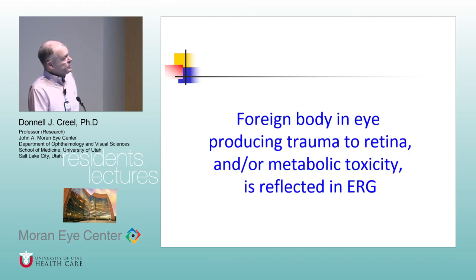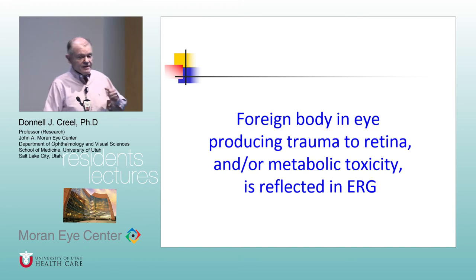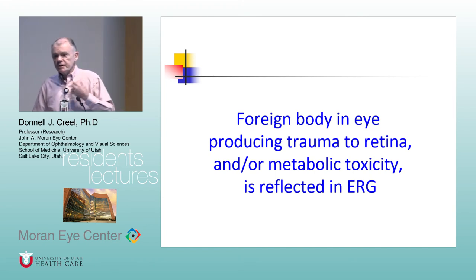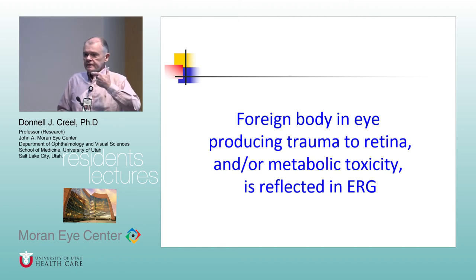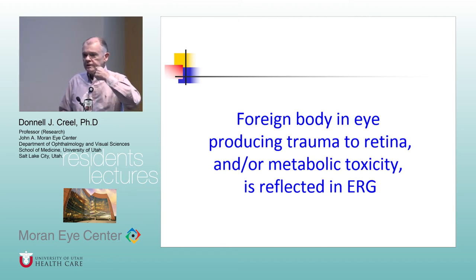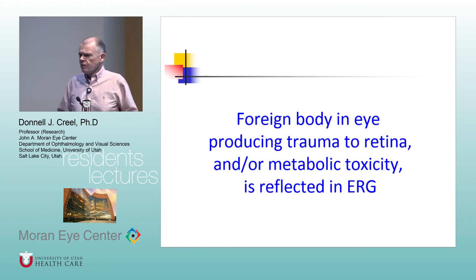What happens when you get a foreign body in the eye? The effect of a foreign body in the eye is graded much like the abnormality you would see in vascular issues or in the varied expression of retinitis pigmentosa.